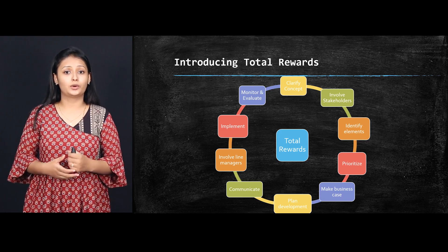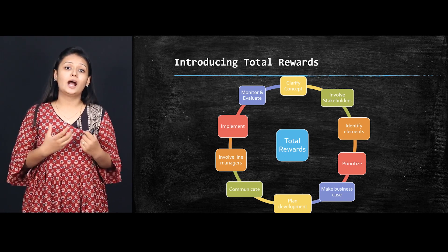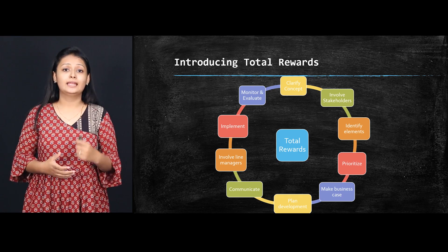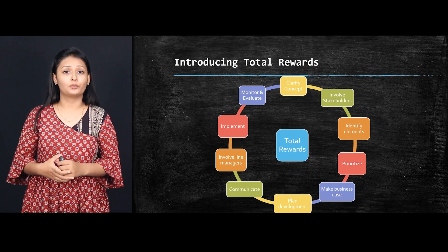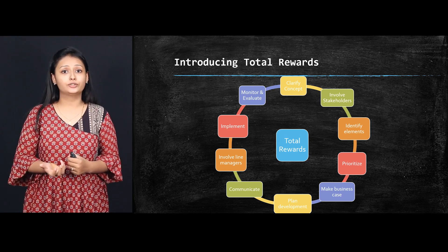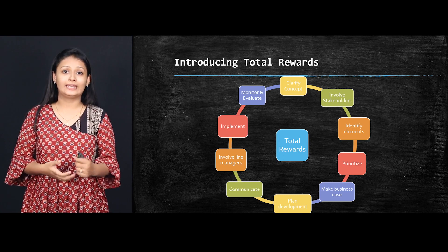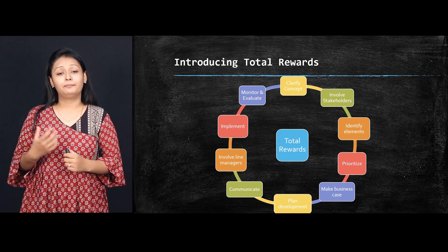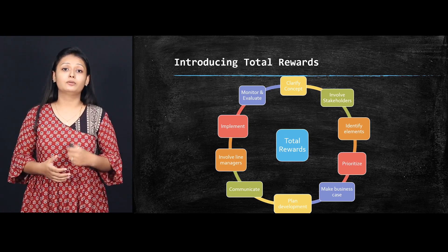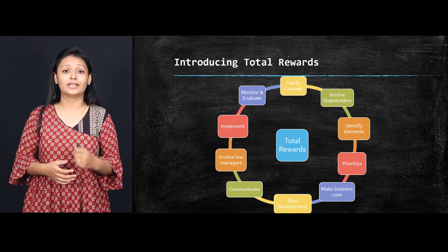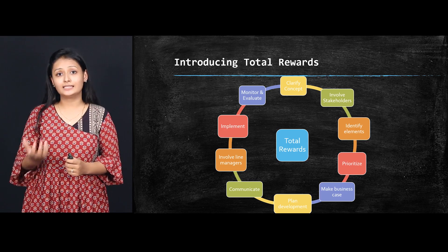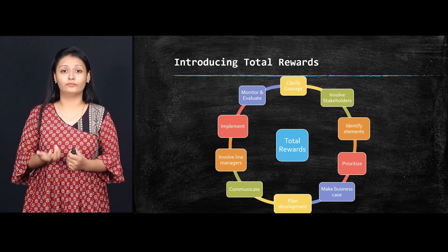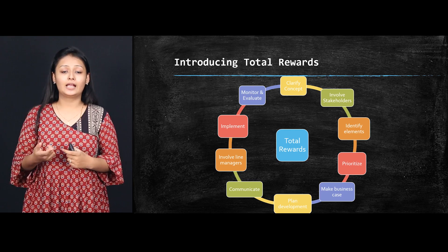The next step is to implement. When implementing the total rewards approach, you need to understand what changes need to be adopted by employees and managers. Change management plays a key role here — you will observe changes in behavior and attitude of employees, whether they are responding positively or negatively. Finally, monitor and evaluate: once planning and implementation are complete, you need to monitor and evaluate the whole process on a regular basis to assess and identify improvements.